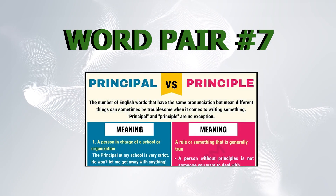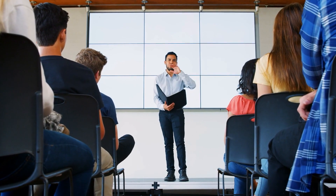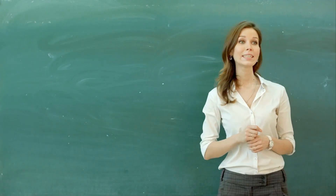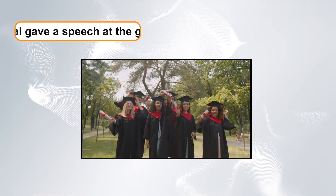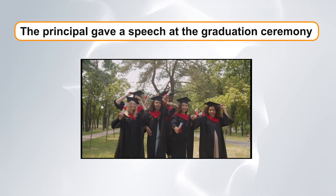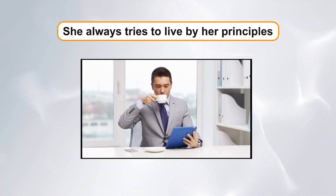Word pair number seven: principal versus principle. Principal is a noun referring to the head of a school or the primary person in a situation, or an adjective meaning the main or most important. Principle, on the other hand, is a noun that refers to a fundamental rule, belief, or concept. Example sentences: One, the principal gave a speech at the graduation ceremony. Two, she always tries to live by her principles.